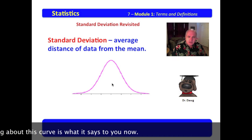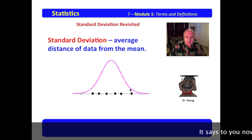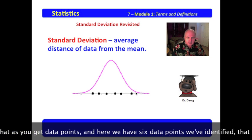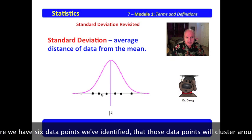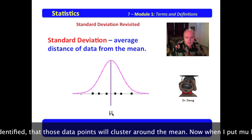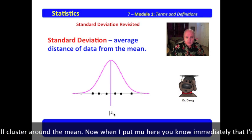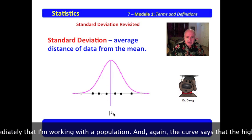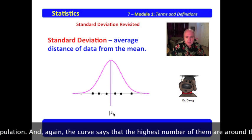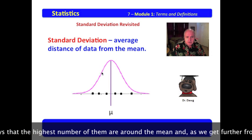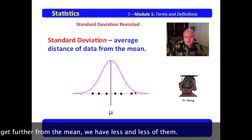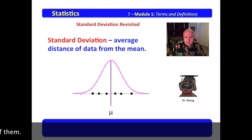We will develop it in the next module. But what is interesting about this curve is what it says to you now. It says that as you get data points, and here we have six data points we've identified, that those data points will cluster around the mean. Now, when I put mu here, you know immediately that I'm working with a population. And again, the curve says that the highest number of them are around the mean. And as we get further from the mean, we have less and less of them.